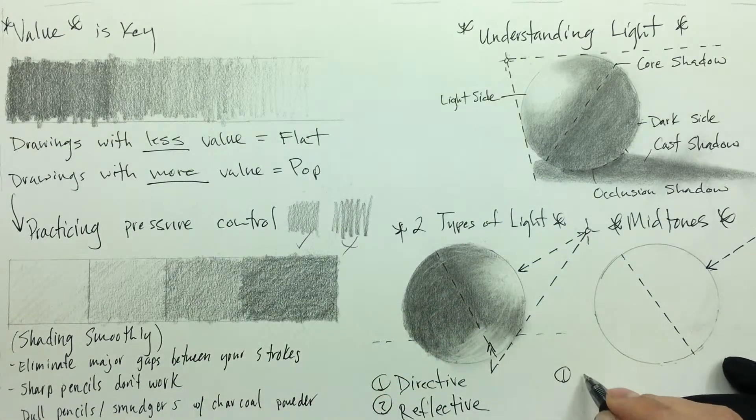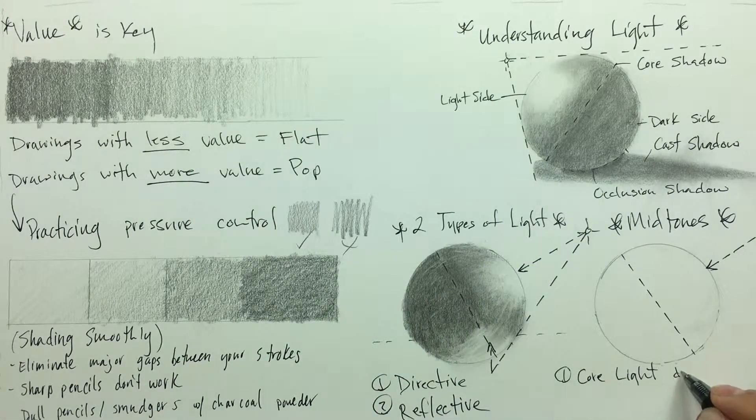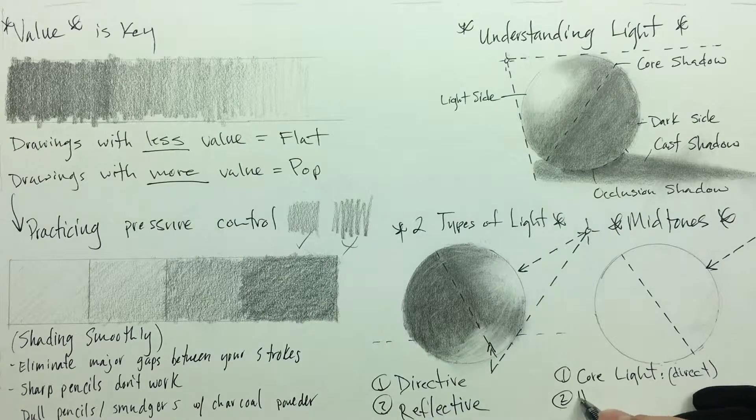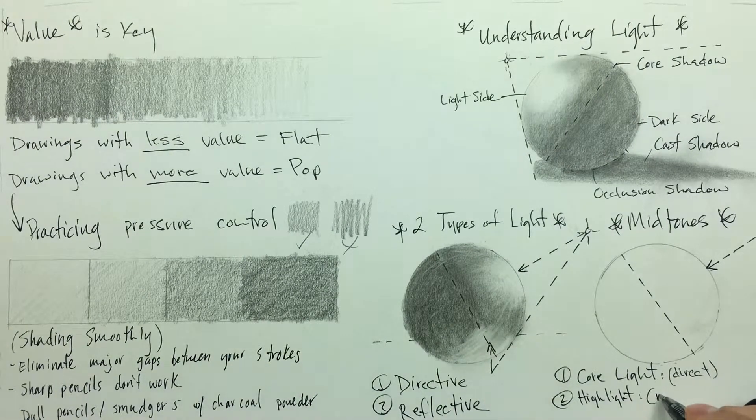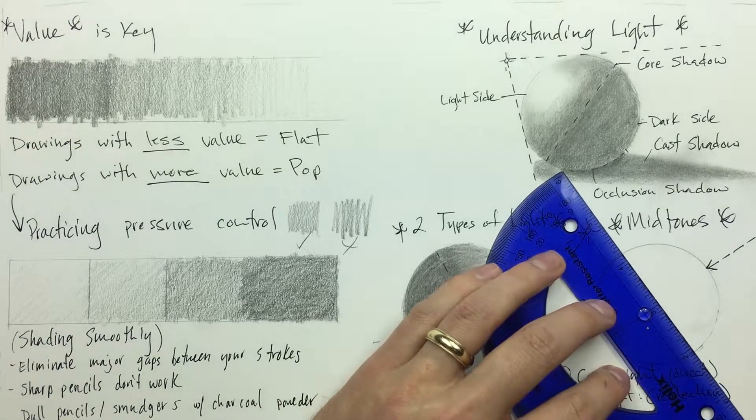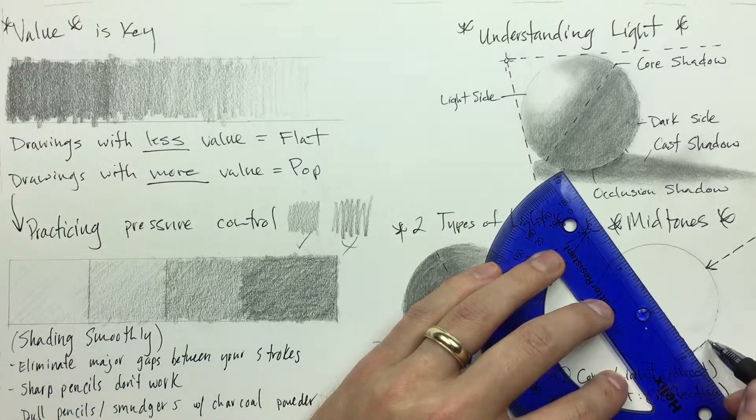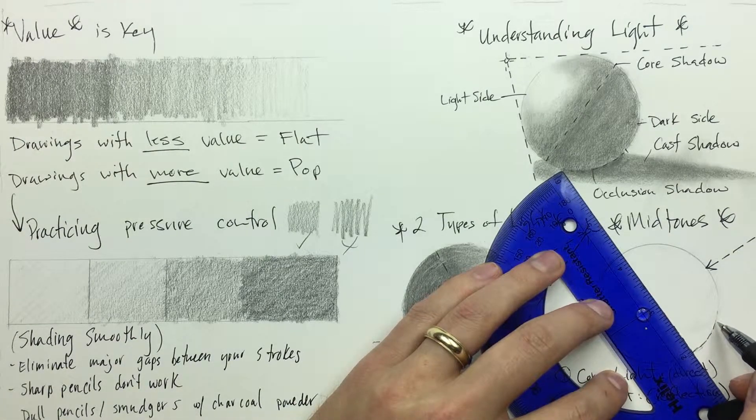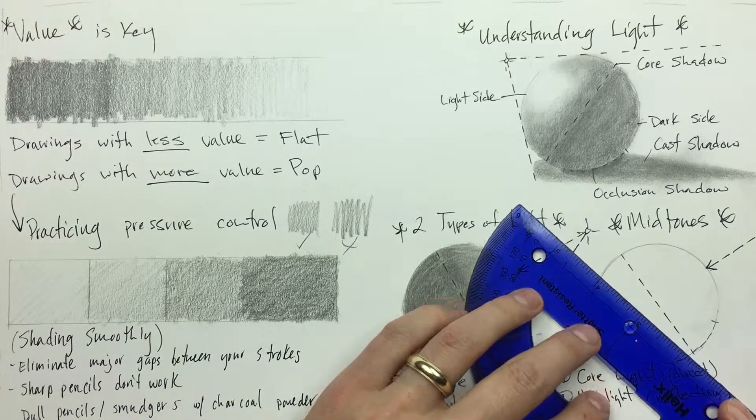It's important to note that core light, which is much like directive light, and highlights, which of course are reflective light, will play to your midtones. But understanding that midtones start at the core shadow is really all you need to worry about.